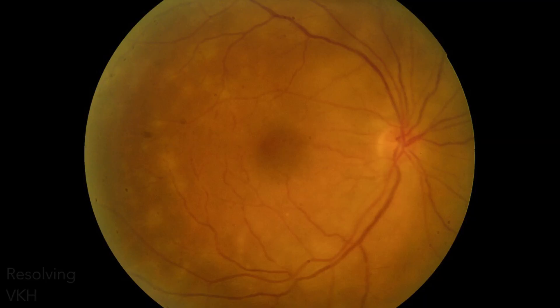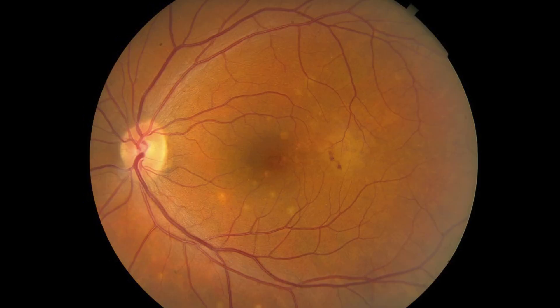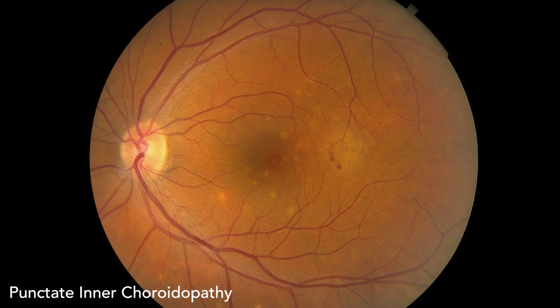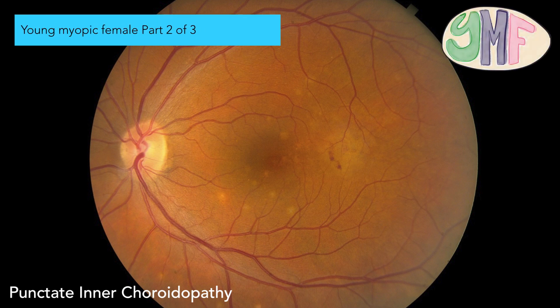So another VKH patient with little white dots. White dot syndrome, yes or no, Aaron? Yes. That's right. And do you know which one? It's PIC. That's right. Punctate inner choroidopathy — younger or older than MCP patients on average? PIC is younger. Think of PIC as the younger sister of MCP — 29 years old versus 45.